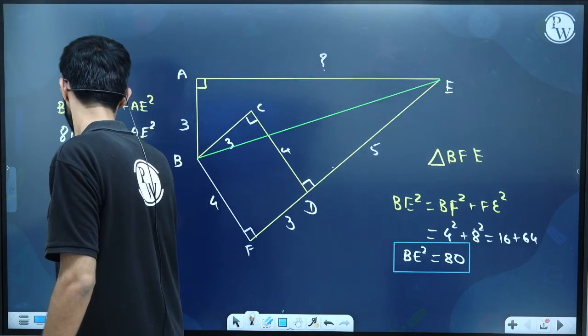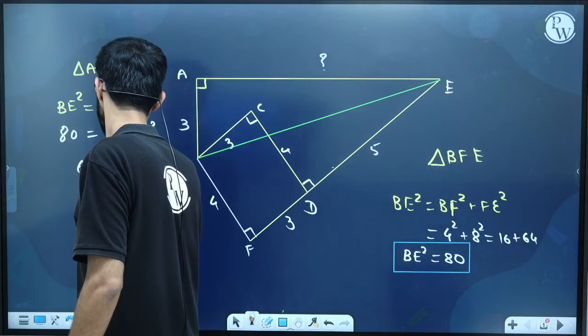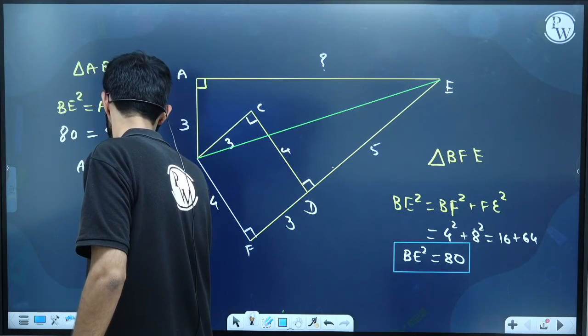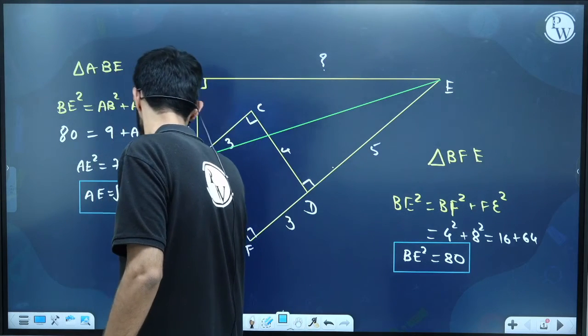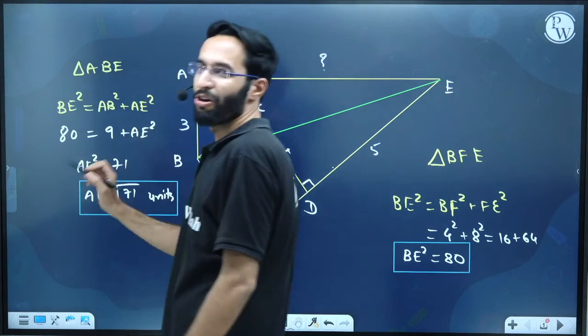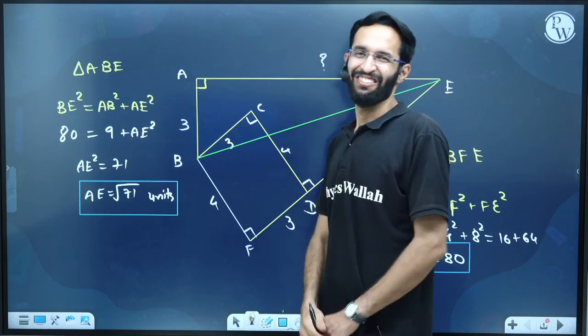From here I can tell that AE square will be 80 minus 9, which is 71. So AE will be root 71. I hope now you understood how your AE is related with all these sides. Wish you all the best.